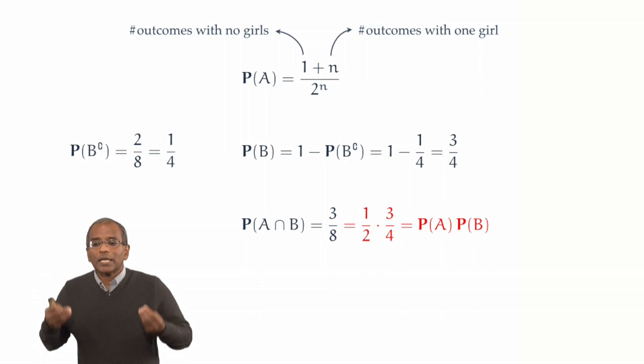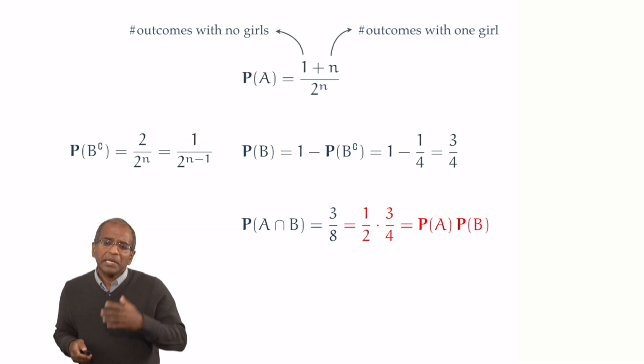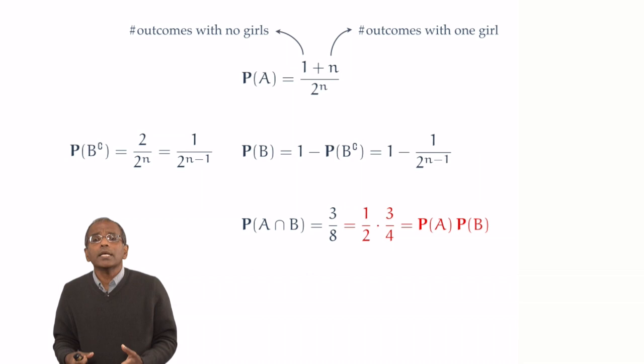Alright, what about B? Well, again, let's start with B complement, because that's simple. In this setting again, B complement means there are children of only one gender, which means all boys or all girls. And there are no other possibilities. And therefore, the probability of B complement is simply 2 in 2 to the power n. Cancel out a 2 in numerator and denominator. It's 1 in 2 to the power n minus 1. What about the probability of B? Well, additivity rides to the rescue. It's 1 minus the reciprocal of 2 to the power n minus 1.